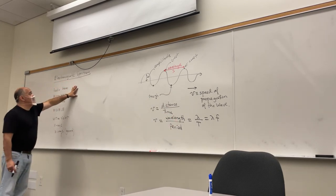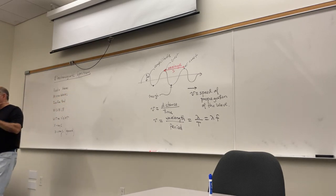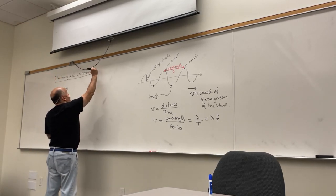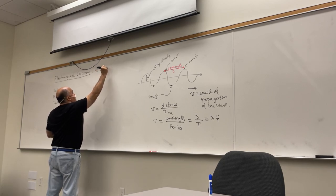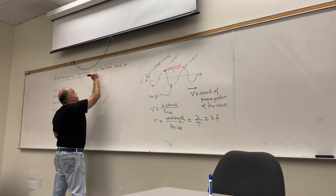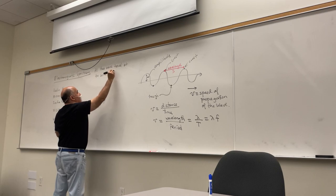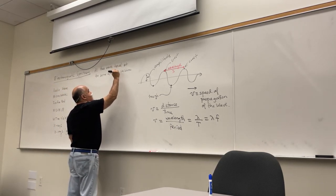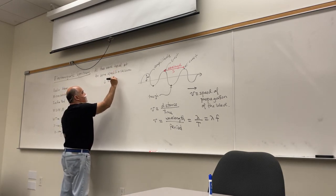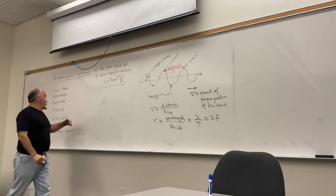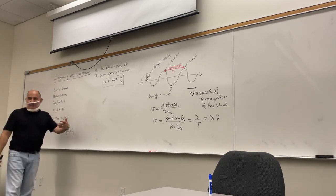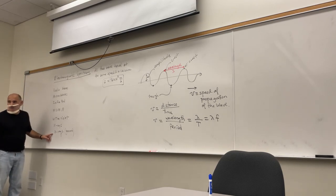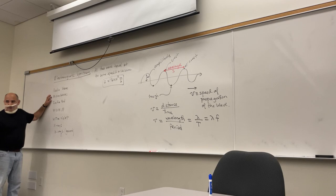All electromagnetic waves in the spectrum travel at the same speed in vacuum — called c — which equals 3 × 10⁸ meters per second. Gamma rays, microwaves, radio waves — all travel in vacuum at 3 × 10⁸ m/s.